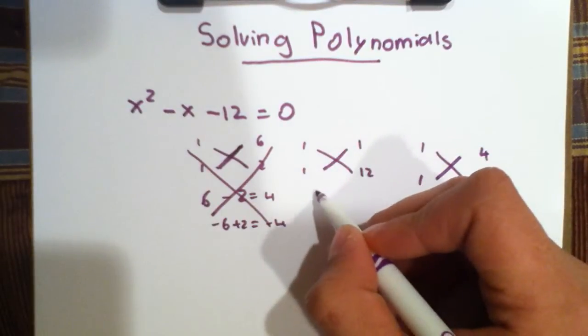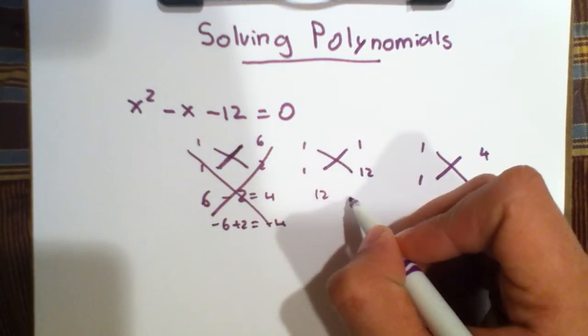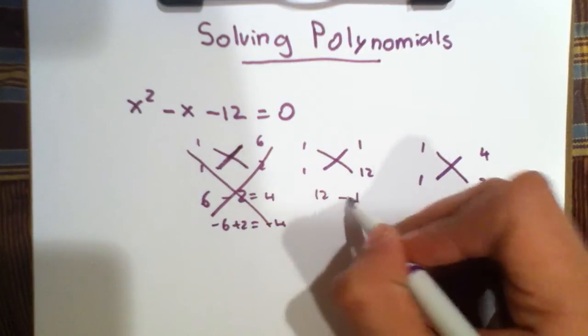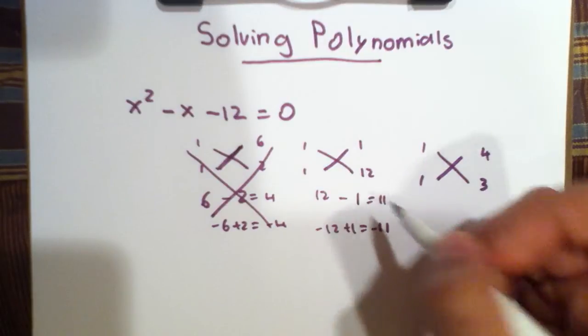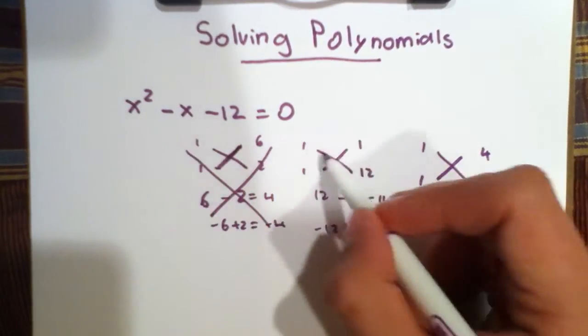This one, 12 times 1 is 12, and 1. So 12 minus 1 is equal to 11, and negative 12 plus 1 is equal to negative 11. So that doesn't work either, because we're trying to achieve a negative 1 here.